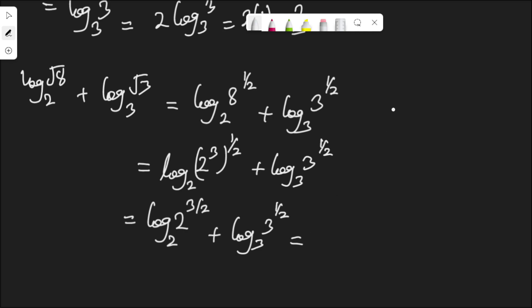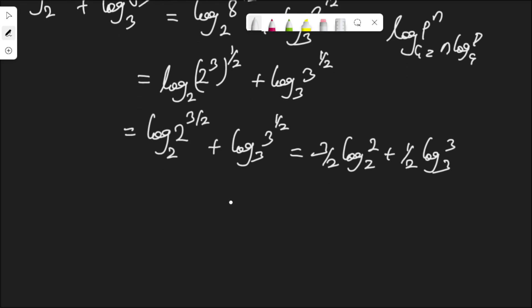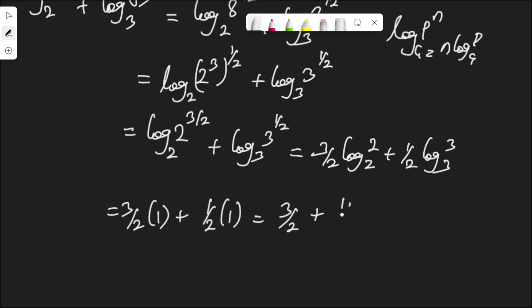Applying the log rule — log B to the power of N to base A equals N log B to base A — this becomes 3/2 log 2 to base 2, plus 1/2 log 3 to base 3. Log 2 to base 2 is 1, so 1 times 3/2 gives 3/2. Log 3 to base 3 is also 1, so 1/2 times 1 gives 1/2. I have 3/2 plus 1/2. The denominators are the same, so adding the numerators: 3 plus 1 over 2 is 4/2, which equals 2.